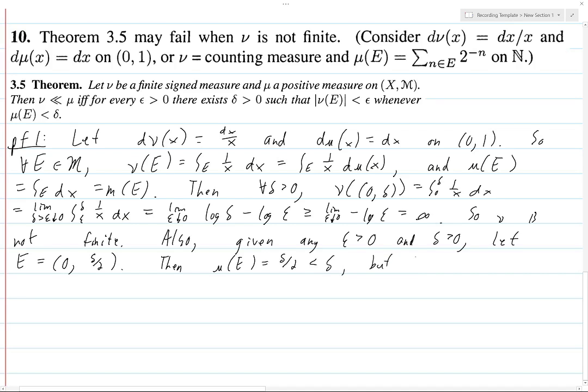but the absolute value of ν(E), as we know, is equal to infinity. So, for all epsilon greater than 0, there does not exist delta greater than 0 such that μ(E) less than delta implies that norm of ν(E) is less than epsilon. So, then, theorem, the conclusion of theorem 3.5 does not hold.